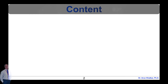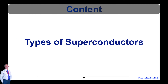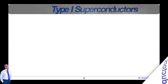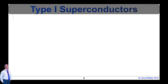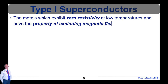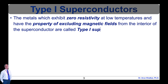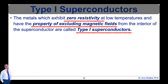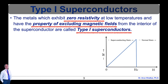The content of this lecture video is as follows. I will discuss about types of superconductors which are type 1 superconductor and type 2 superconductor. There are 30 pure metals which exhibit zero resistivity at low temperatures and have the property of excluding magnetic fields from the interior of their superconductor. They are called type 1 superconductors.